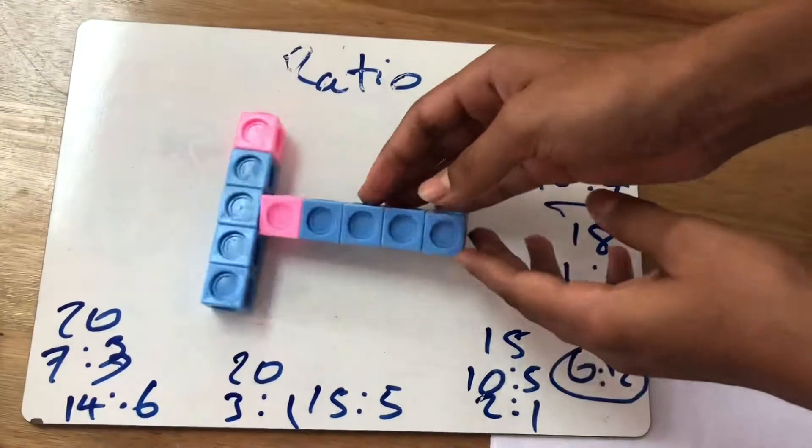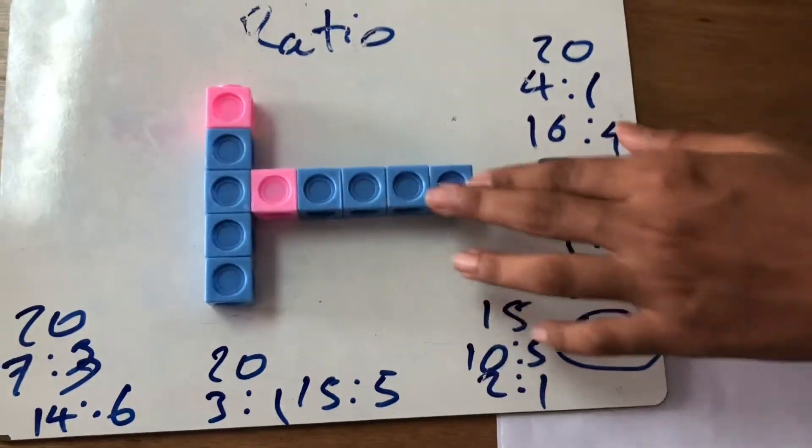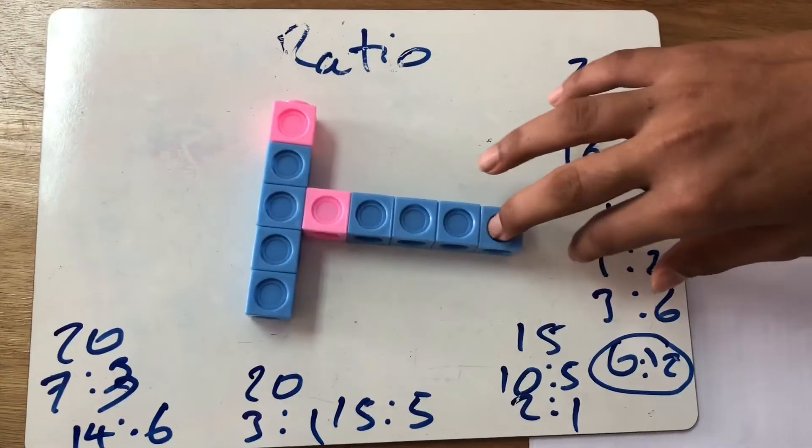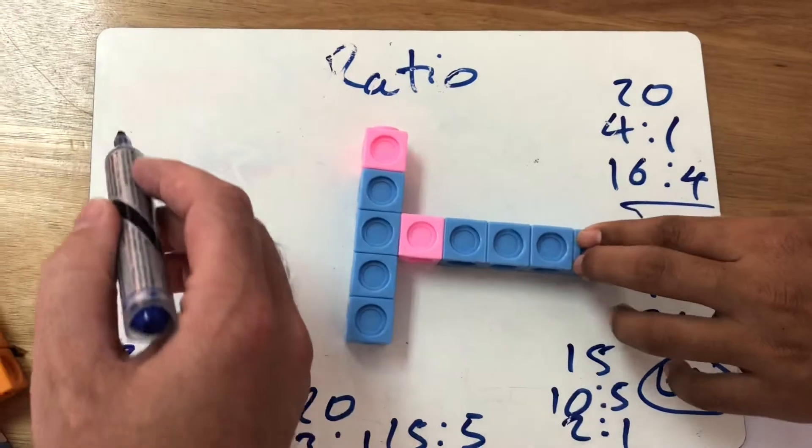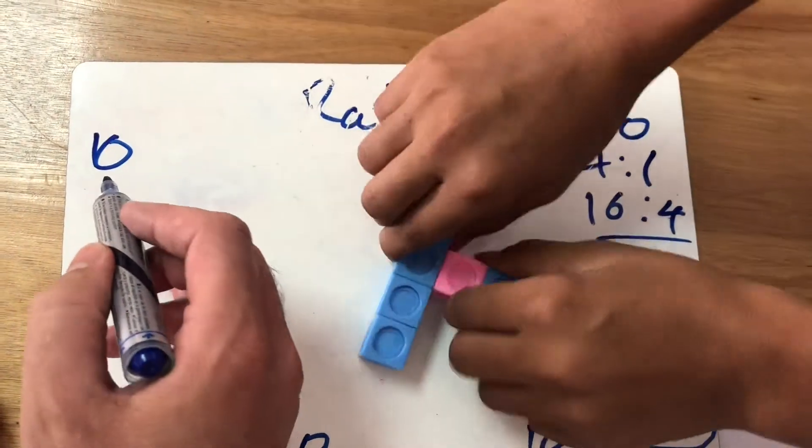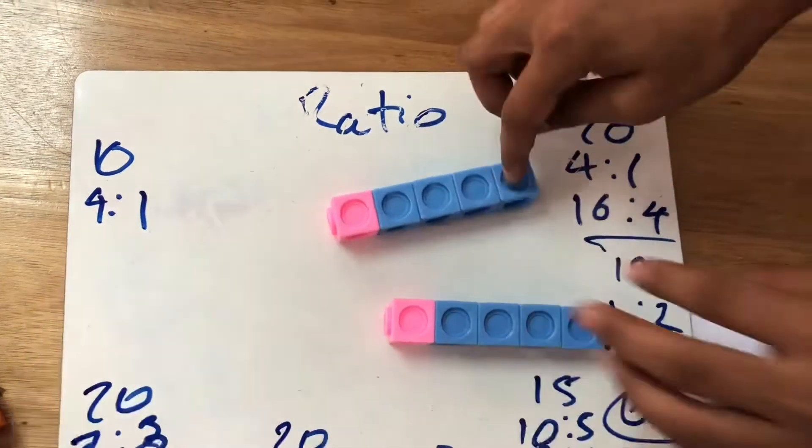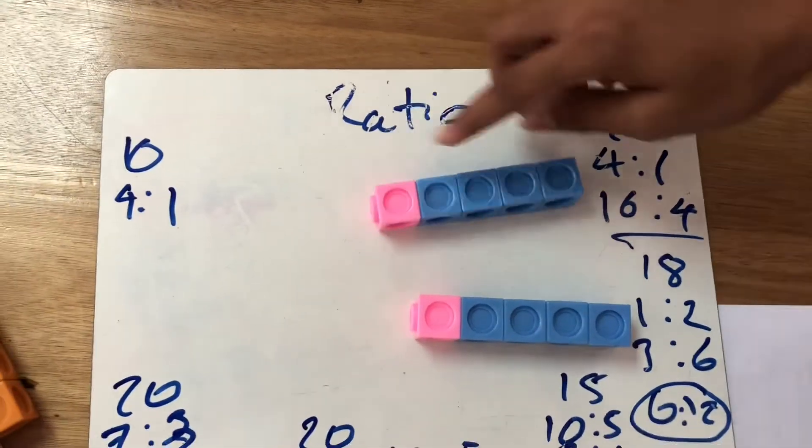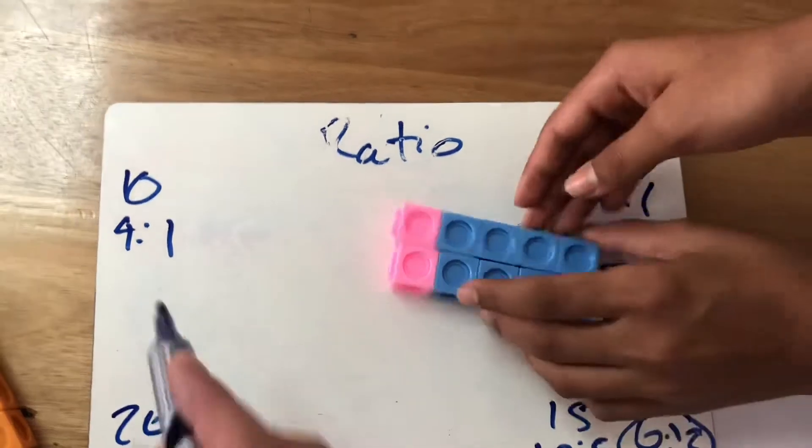Next what have we got? Here I have a T from Teen Titans Go. So I want to break down 10 pieces into 4 to 1. So here you go. 1, 2, 3, 4, 2, 1. 4 to 1 is equivalent to 8 to 2.